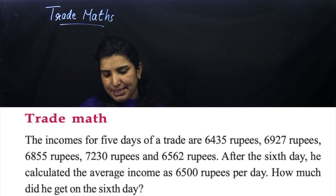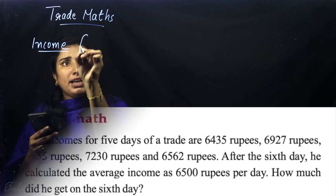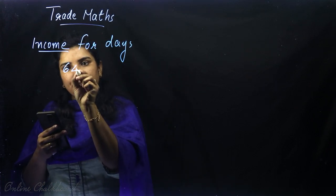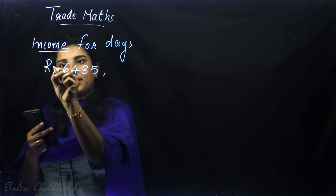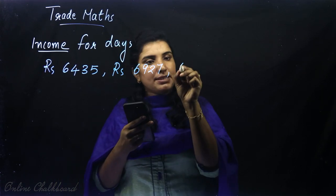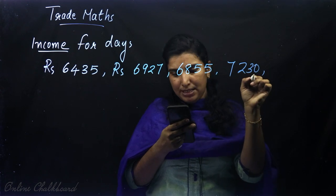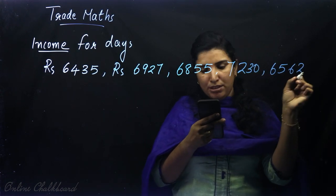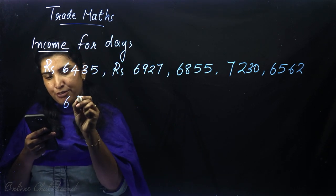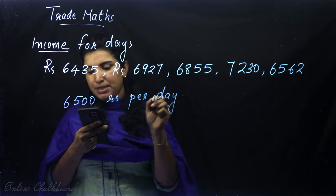Now for the practice problem. The income for 5 days of a trade is: day 1 — 6,435; day 2 — 6,927; day 3 — 6,855; day 4 — 7,230; day 5 — 6,855. After 6 days, he calculated the average income as 6,500 per day. How much did he get on the 6th day?